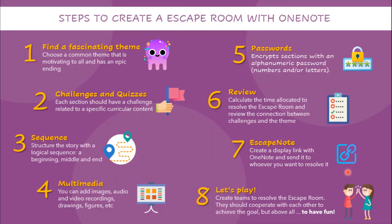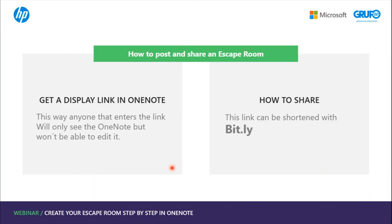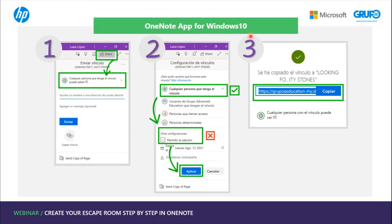How do you post and share an escape room? First, get a display link in OneNote so that when users log in, they can only view the notebook but cannot modify the contents. Since this link is usually very long, before sharing you can shorten it with a tool called Bitly. In the OneNote app downloaded from Windows, click the Share button in the upper right-hand corner and configure it so that anyone with the link can view, then copy and share it.